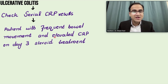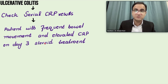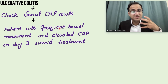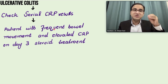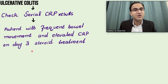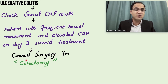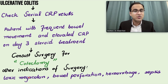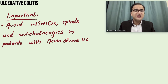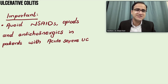Patients with frequent bowel movements and an elevated CRP on day 3 to 5 of steroid treatment who are not responding to steroids may need surgical treatment — specifically colectomy. Consult surgery on day 3 to 5 if the patient does not respond to steroids. Other indications for surgery include toxic megacolon, bowel perforation, hemorrhage, and sepsis.